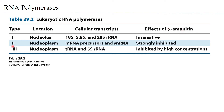RNA polymerase 2 is found in the nucleoplasm and is responsible for synthesizing most functional or structural genes that give rise to mRNA precursors, and also small nuclear RNA. This is very strongly inhibited by alpha-amanitin. RNA polymerase 3 is also present in the nucleoplasm and is mainly responsible for synthesis of tRNA and 5s rRNA, and this too is inhibited, but it needs high concentrations of alpha-amanitin to inhibit the polymerase activity.